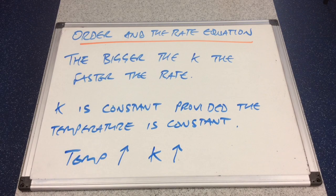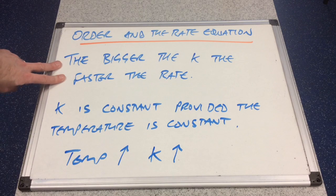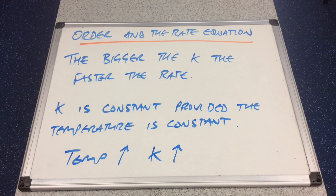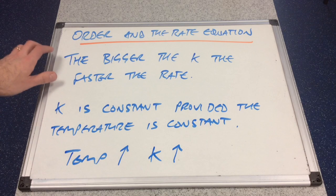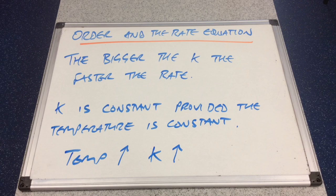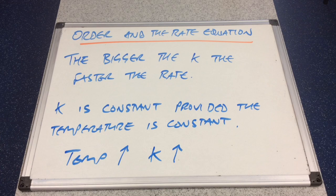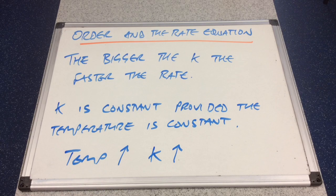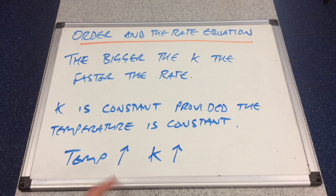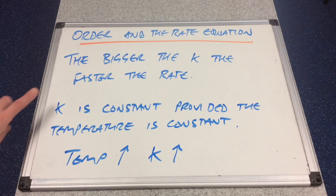A few facts about K, the rate constant: the bigger the value of K, the faster the reaction is occurring — large K means a fast reaction, a high rate. It's called a rate constant because it is constant, provided the temperature is kept constant. If you change the temperature, K changes. If temperature increases, reactions occur faster and K increases accordingly. If you only change concentrations while keeping temperature constant, K will stay constant.